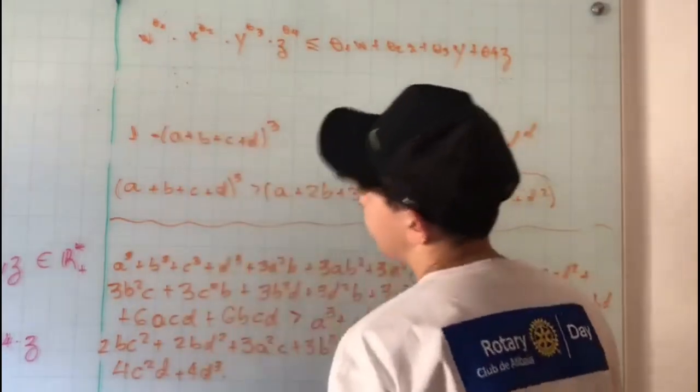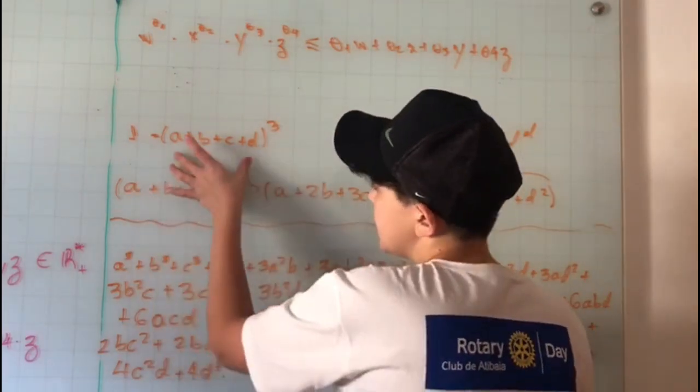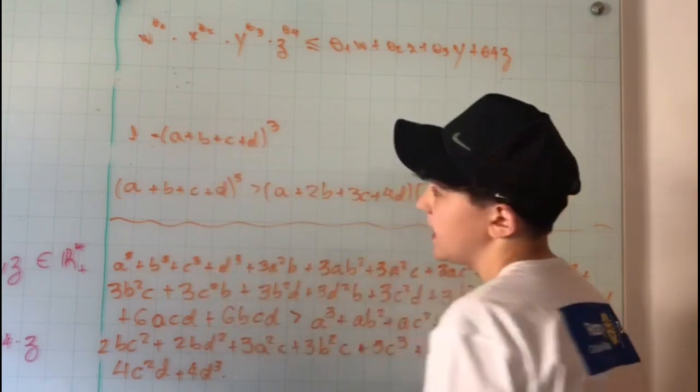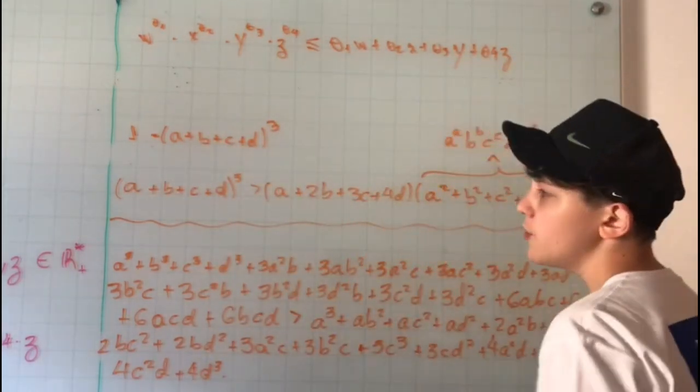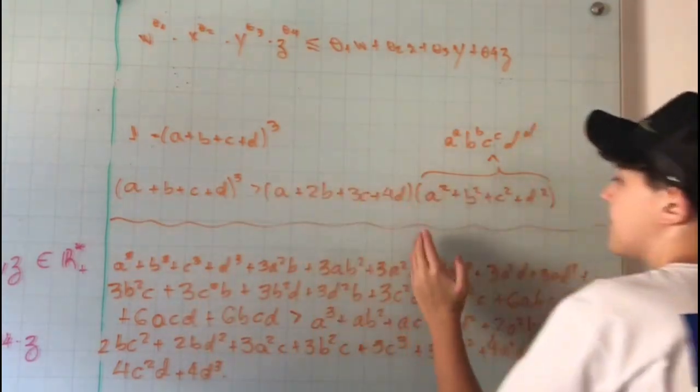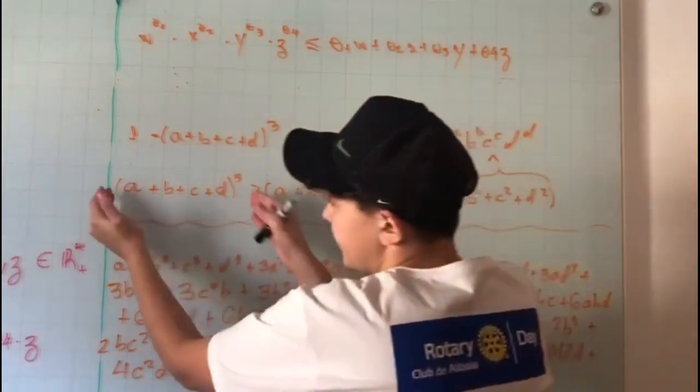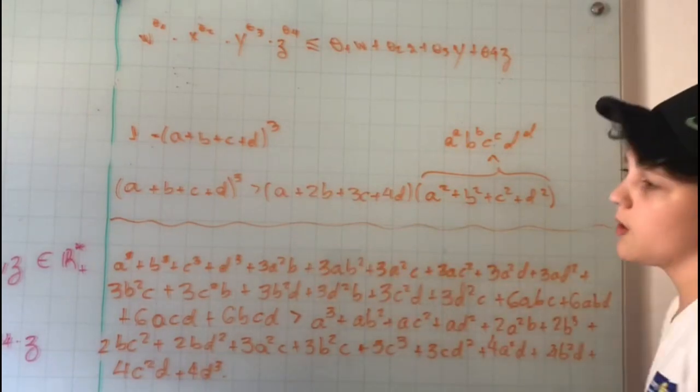After having this inequality, we can show it's easy to see that 1 is equal to (a + b + c + d)³, because 1³ equals this cubed. All we have to do is prove that 1, which is this thing, is bigger than this term, because this part is bigger than this.